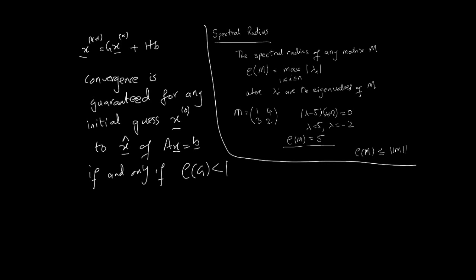This is a very important property — one we can use for matrices to figure out whether any initial guess would work, because it remains a question whether we can get convergence for any initial guess. To recap: G is usually I minus H·A as we have structured it, and it is H that differs between methods. H equals D⁻¹ for the Jacobi method, and H equals L⁻¹ for the Gauss-Seidel method.